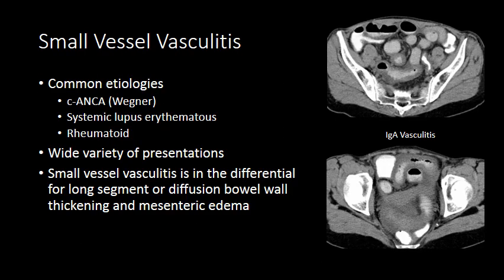Small vessel vasculitis is a broad term for a large number of autoimmune conditions, the most common being C-ANCA (previously Wegener's granulomatosis), lupus, and rheumatoid arthritis. There is a wide variety of presentations, but whenever you see long segment wall thickening without another clear etiology, vasculitis should be in your differential. While it can present with long segment mural stratification, mucosal hyperemia, and mesenteric edema, it doesn't necessarily have to — due to the heterogeneity of the different vasculitides. Keep vasculitis in mind as it can mimic many other pathologies.